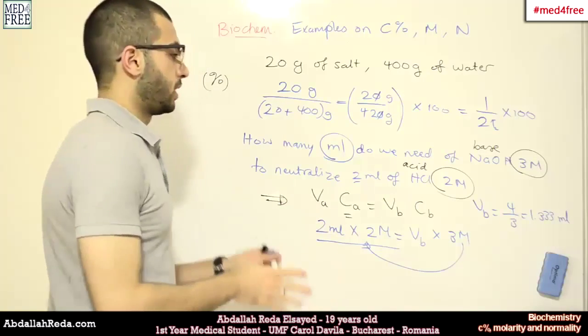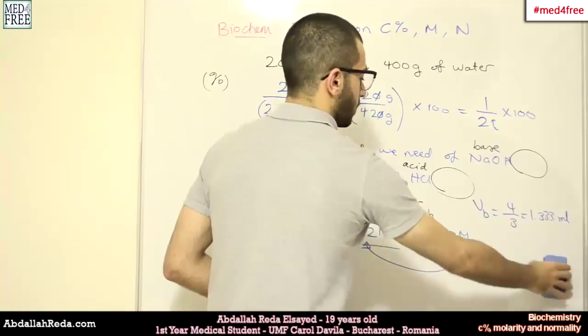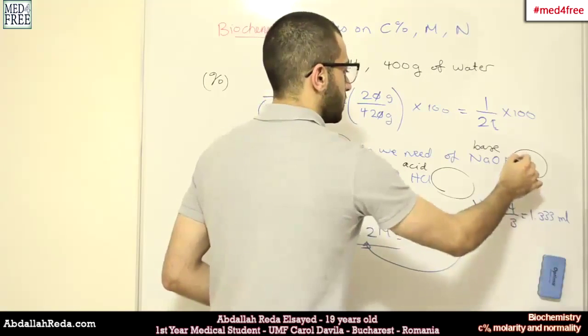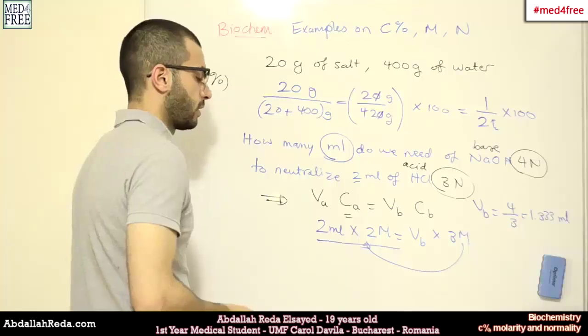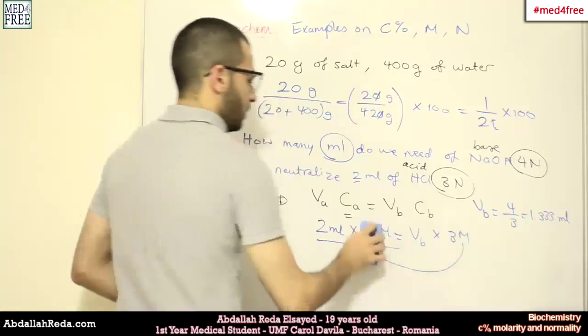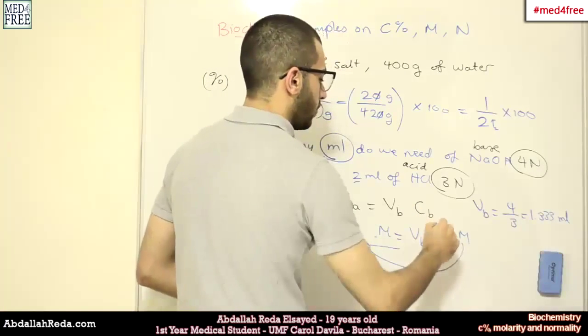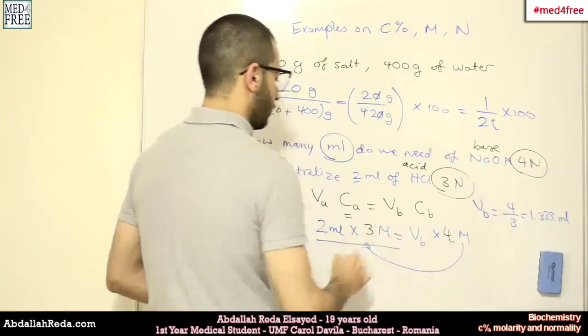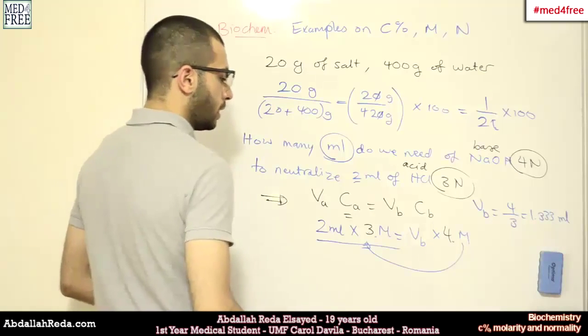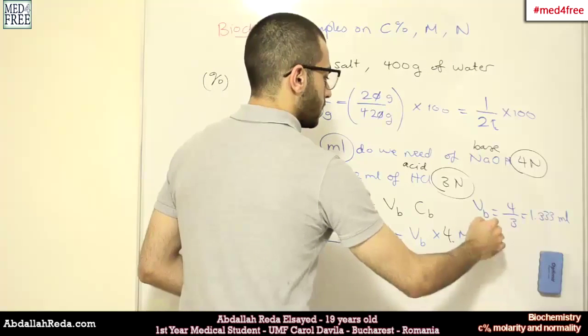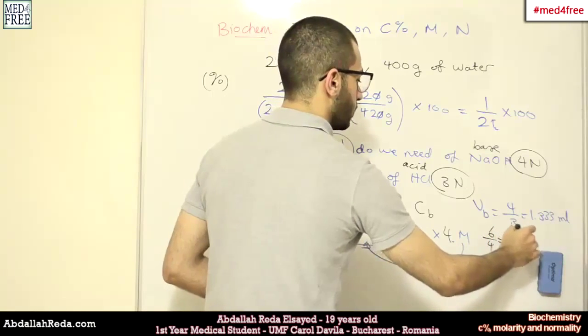The normality question will be just the same like this, but instead of using molars, we can use normals. So if I say 4N and 3N here, I just change the values here for the concentration. Here we have 3 for the acid, and here we have 4 for the base. So 4 and 3, it will be 6 divided by 4, which is 1.5.